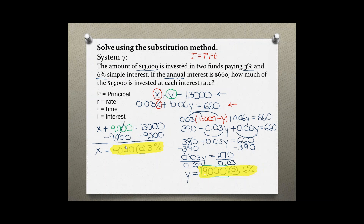So from the total $13,000, I invested $4,000 at the 3% interest rate and $9,000 at the 6% interest rate. Thank you.